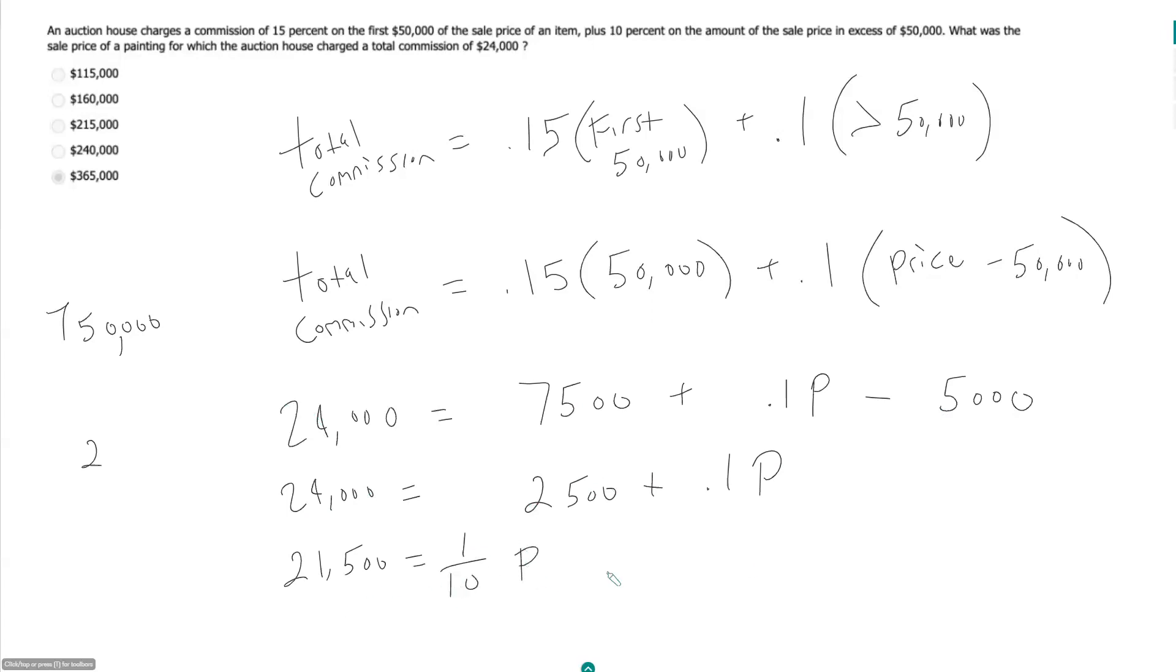So to find p here I could multiply each side by 10 to get rid of that one-tenth. And we get p is equal to 21,500 with an extra zero at the end, 215,000.